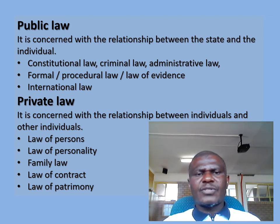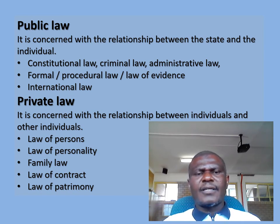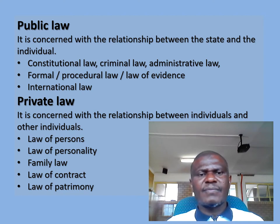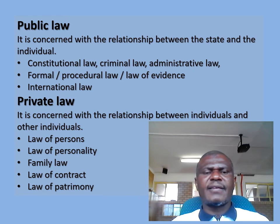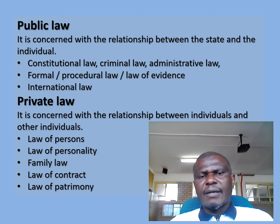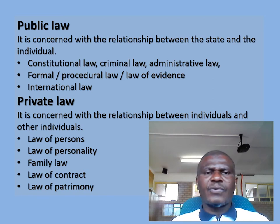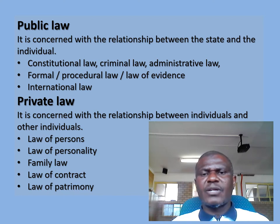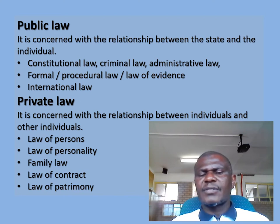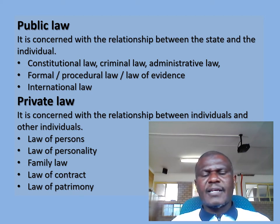Law is actually classifiable in various divisions and branches. We have public law and we also have private law. By public law, we mean the law concerned with the relationships between the state and the individual. Examples of branches that fall within this broad class include constitutional law, criminal law, administrative law, and formal or procedural law — subjects such as the law of procedure and the law of evidence, including criminal procedure as well as civil procedure. International law also falls under the broad class called public law.